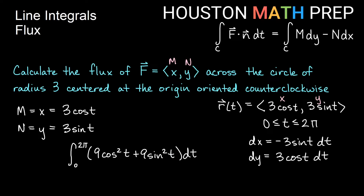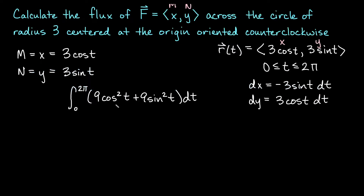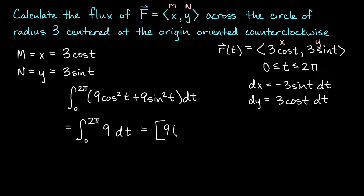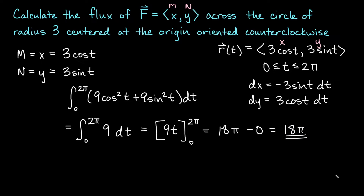We're integrating from 0 to 2π dt. You can see this is 9 times the Pythagorean identity: cosine squared t plus sine squared t equals 1. So 9 times 1 gives us the integral of 9, whose antiderivative is 9t. Evaluating from 0 to 2π: plugging in 2π gives 18π, plugging in 0 gives 0. So flux equals 18π.